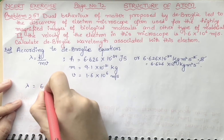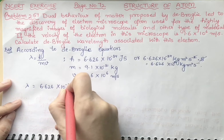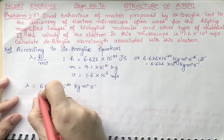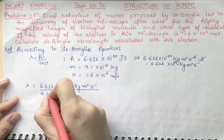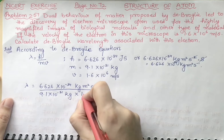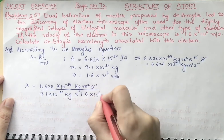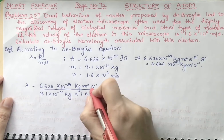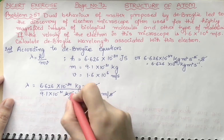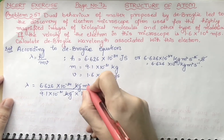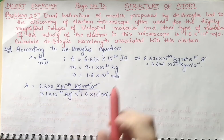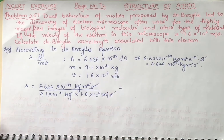Now putting all the values in: lambda = (6.626 × 10⁻³⁴ kg·m²·s⁻¹) divided by (9.1 × 10⁻³¹ kg × 1.6 × 10⁶ m·s⁻¹). The seconds cancel, kg cancels with kg, and one meter cancels from meter squared, leaving just meters as the final unit — which is correct for wavelength.